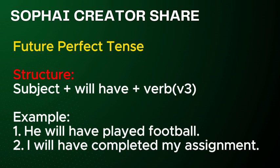Future perfect tense. Structure: Subject plus will have, plus verb V3. Examples: 1. He will have played football. 2. I will have completed my assignment.